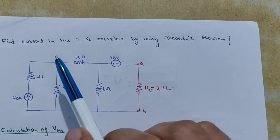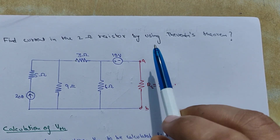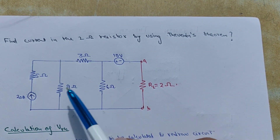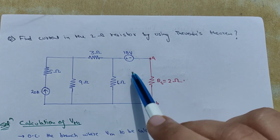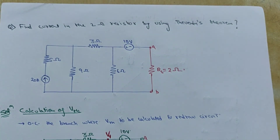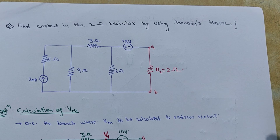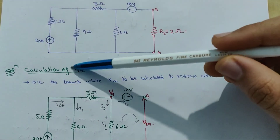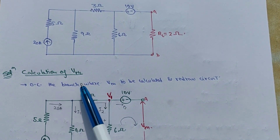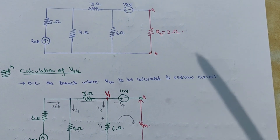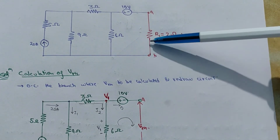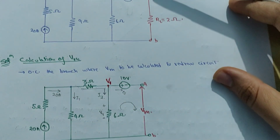So let's start the example. We have to find the current in the 2-ohm resistor by using Thevenin theorem. The 2-ohm resistor is connected between A and B. This is a simple circuit with two sources and five resistances. The first step whenever you do any Thevenin theorem question is to calculate VTH by open circuiting the branch where VTH is to be calculated and redrawing the circuit.